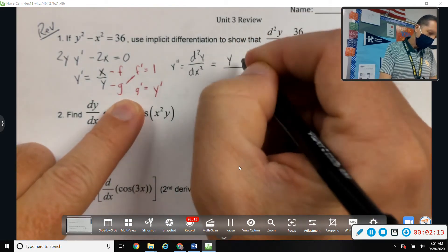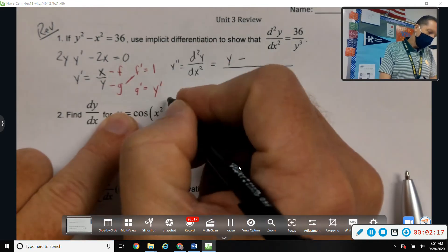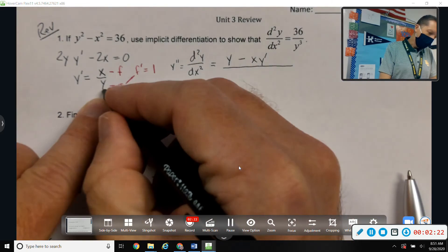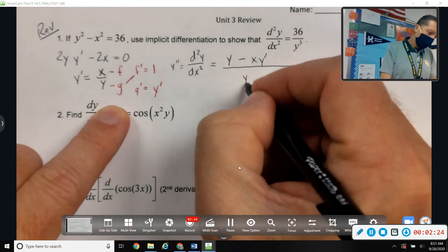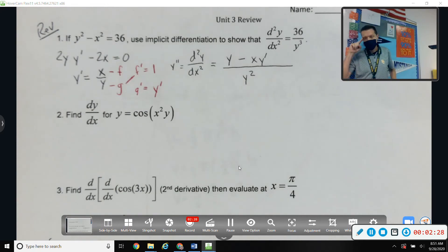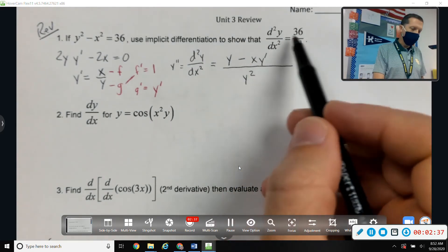So that's y minus the other direction, x*y', all over g squared. So all over y squared. Okay, well that's the second derivative, but it doesn't really look like what I'm supposed to get.